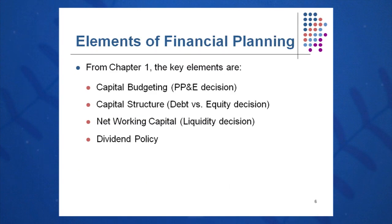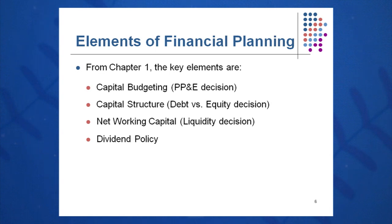From Chapter 1, we remember the financial manager worries about three things — and in this chapter we add a fourth. The CFO worries about capital budgeting — property, plant, and equipment. Second, capital structure: where will I get the money to pay for new buildings needed to reach the sales goal? How much debt and equity will I take on? Third, how much net working capital will I need to run my business — a liquidity decision: will I have enough current assets to pay off current liabilities? And fourth, a new dimension: do I pay dividends or not? This is a board of directors and management decision — you do not have to pay dividends; you can plow all the money back into the company.